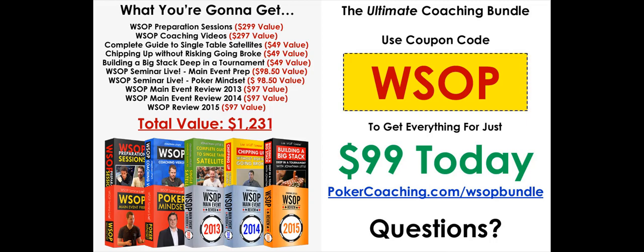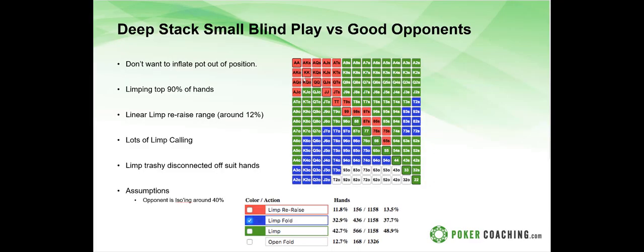Cedric asks about adjustments versus maniacs. Against a maniac in the big blind, play the limp-everything strategy and hit them with a limp re-raise when they raise you. Depending on how maniacal they are, widen your limp re-raising range — start limp re-raising eights, sevens, ace-nine suited. The wider and crazier they get, the wider you can limp re-raise.